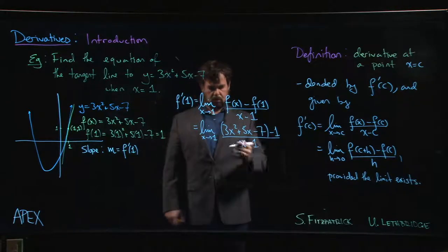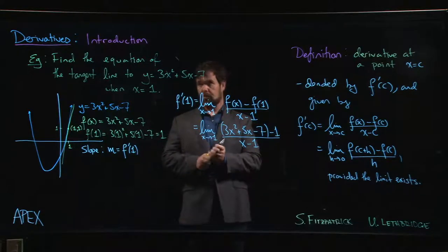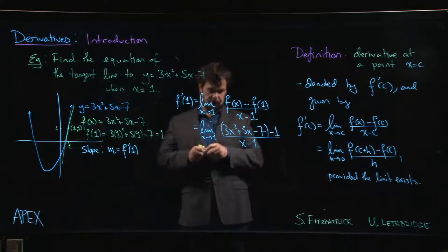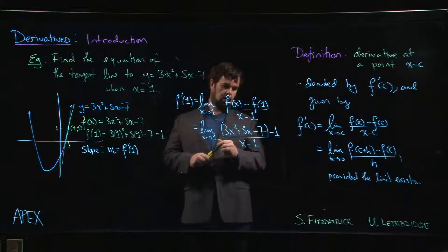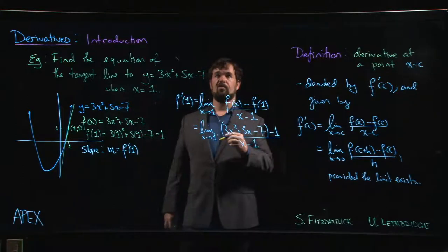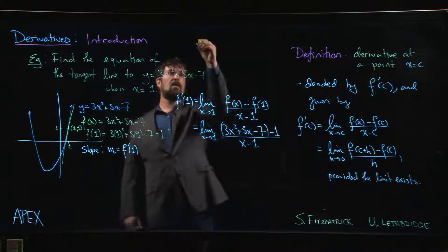So of course if we try to do direct substitution, we're going to get 0 over 0 for this limit. We know that's going to happen. So what we need to do is we need to simplify. So that numerator, let's just do a little bit of rough work at the top.